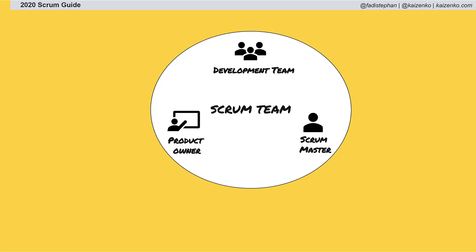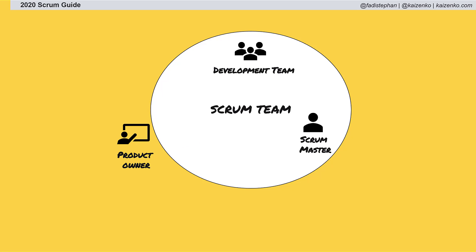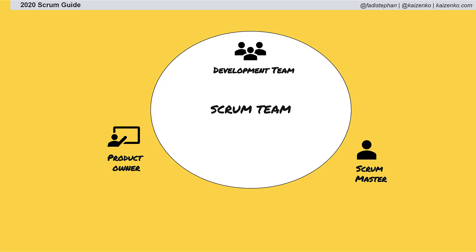This terminology was always awkward and confusing, with many incorrectly referring to the development team as the Scrum team and leaving the Scrum master and product owner as outsiders to the team. It diminished the notion of one team working together collaboratively to deliver value.